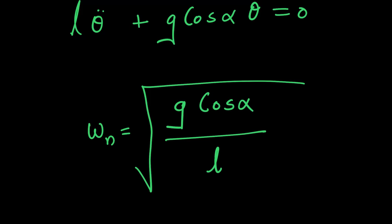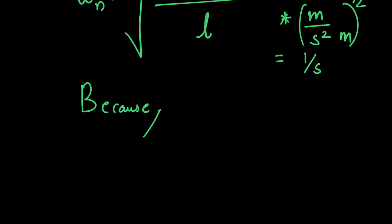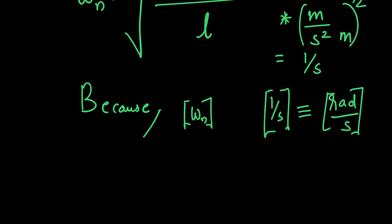In case if you are doubtful of the final answer you got I recommend you to do the dimensional check. Make sure your dimensions are correct. So g has a dimension of meter per second square then you have l is having dimensions of meter and then you will be left with one by second which makes sense. So that implies omega n or the expression what we have got for omega n is correct because we are getting the dimensions of one by second which is equal to radians per second.